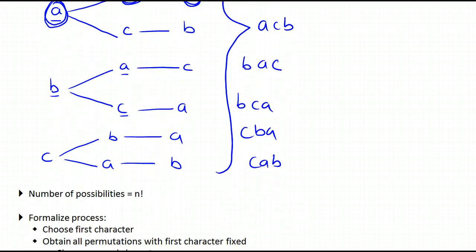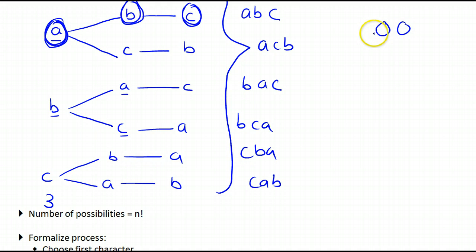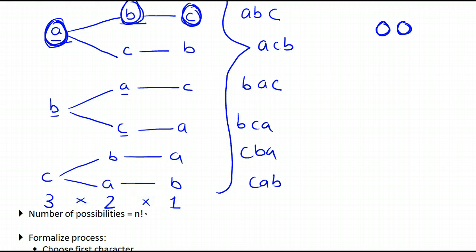Now, how many such permutations do we get? In the first position, we have all three possibilities — we could choose either A, B, or C, so three possibilities. In the second position, we only have two possibilities, since one character has already been chosen. And in the last position, we always have one choice. So we have 3 choices, times 2, times 1 — which is 3 factorial, which is 6.